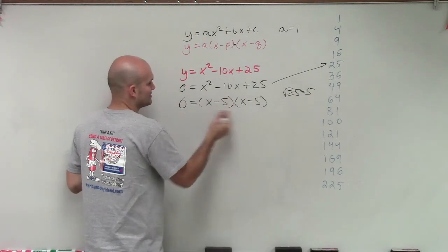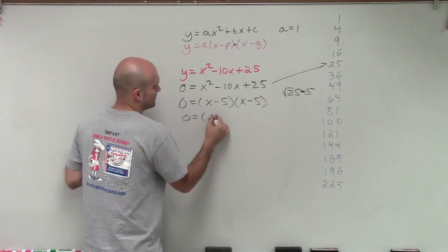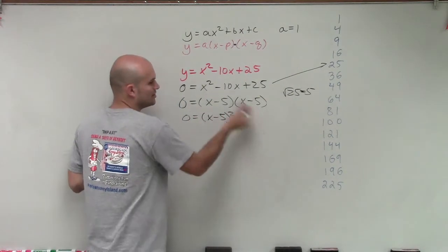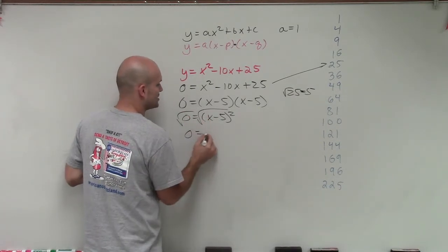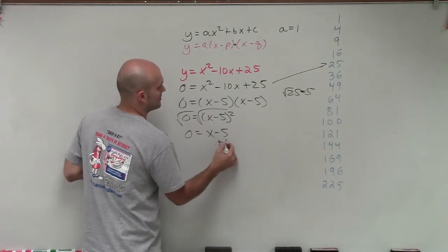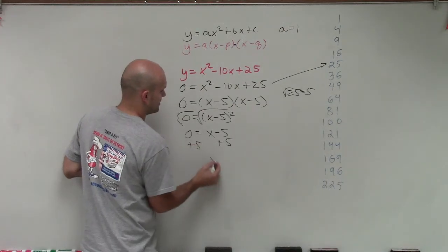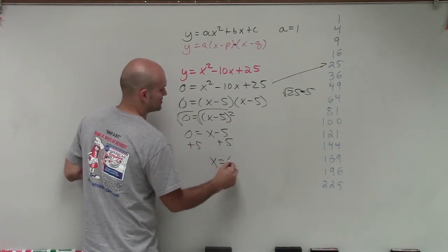Then now what we can do is rewrite this as a squared. Or you could use zero product property from here, but you're going to get the same answer. Using inverse operations: 0 equals x minus 5. Add 5. Answer: x equals 5.